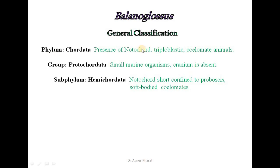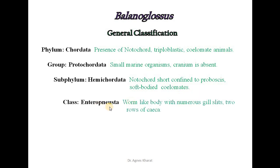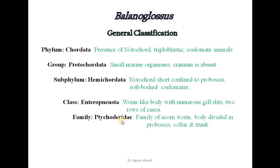Subphylum is Hemichordata — notochord is short, confined to proboscis, soft bodied coelomic organism. Class is Enteropneusta because it has a worm-like body with numerous gill slits, and two rows of septa are present. Family is Ptychoderidae because it is a family of acorn worm. Body is divided into proboscis, collar and trunk, and genus is Balanoglossus. This is the general classification of Balanoglossus.